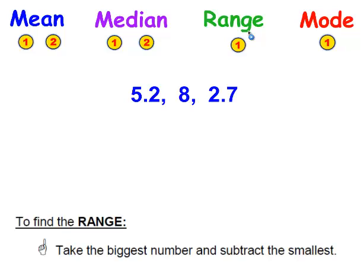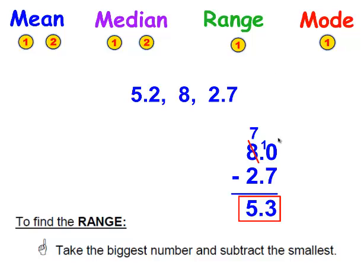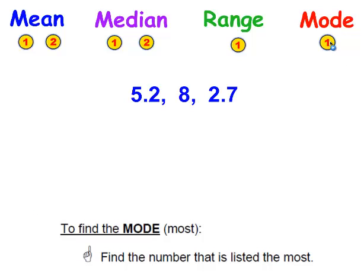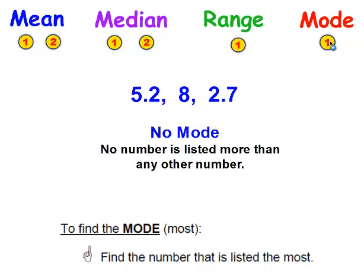To find the range in this set of data, take the largest number — in this case it's 8. If you were to change each one to money, this would be $5.20, $8, and $2.70. Remember, 8 is the largest. Take that and subtract the smallest — don't forget, if you don't see the decimal point there's one behind the number, so make sure it's aligned and don't forget to borrow. And the mode: the mode is the number listed the most, and in this case there is no mode — no number is listed more than any other number. You did a great job.